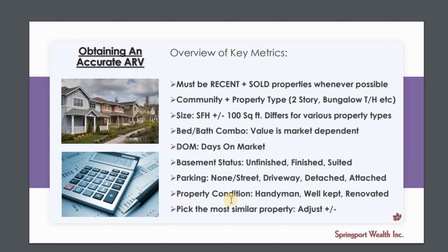Next is the property condition itself. Is it a handyman special, does it need some tender love and care, does it need renovations, or is it well kept? This is the largest sliding scale when it comes to value — you can have a 20-year-old home that's well kept but never renovated, or properties of the same age where only a few bathrooms were renovated but the kitchen is still original, or another property where everything has been updated and a lot was spent on a kitchen.